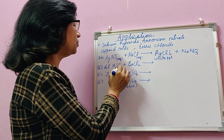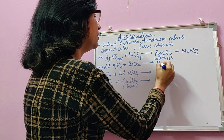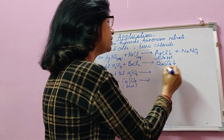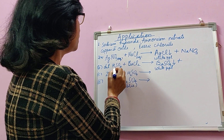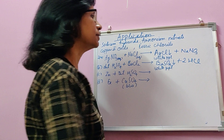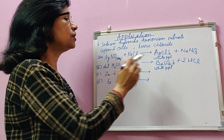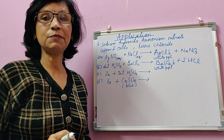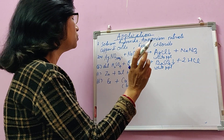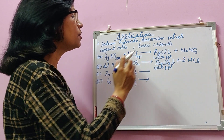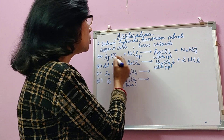Next, barium chloride solution and dilute H₂SO₄ — this is another double decomposition reaction. Barium combines with sulphate to form BaSO₄, which is again a white colored precipitate. The remaining hydrogen and chlorine react to form hydrochloric acid (HCl in solution). These double decomposition reactions in which one product is a precipitate are also called precipitation reactions, and both of these are examples.